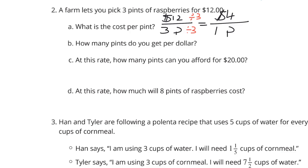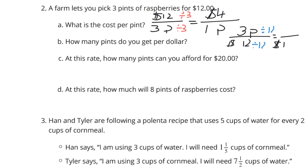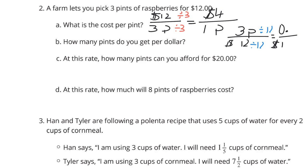What about the pints per dollar? That's a little different. We still know it is 3 pints for $12. If I'm trying to get to $1, we divide by 12. And 3 divided by 12 gives us 0.25 pints. The fraction form of that is 1 fourth — basically, you can get a quarter pint for $1.